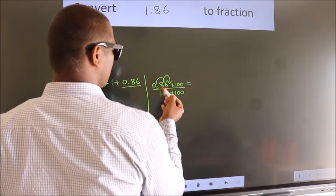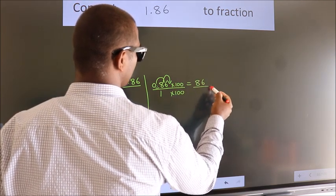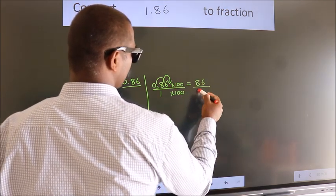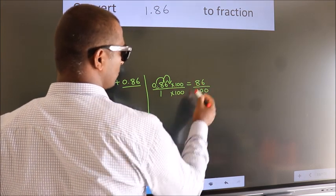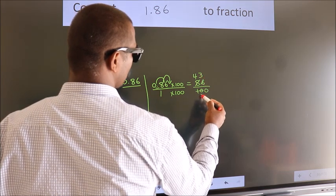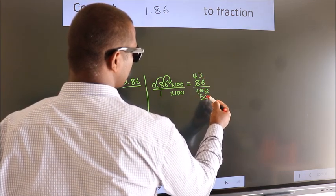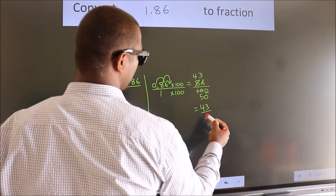Next, 0.86 into 100 is 86. 1 into 100 is 100. Now I cancel with 2: 2 goes into 4, 2 goes into 3, 2 goes into 5. This 0 as it is down. So the fraction we got is 43 by 50.